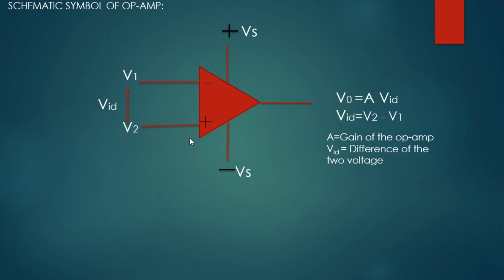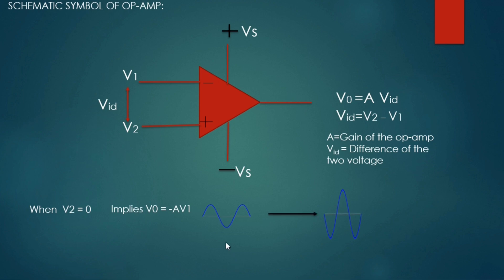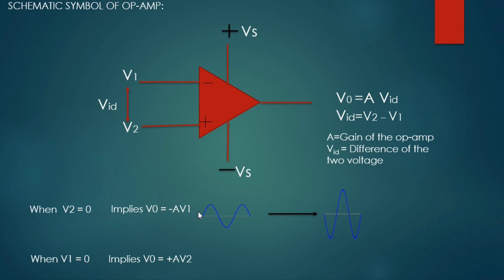These two input voltages are called inverting and non-inverting. When V2 equals 0, that is the input is applied only to the V1 terminal, the output will be negative of the amplifier gain times the input. This means there is a phase difference of 180 degrees between input and output, and that's why the V1 terminal is called the inverting terminal. Similarly, when V1 equals 0 and input is applied only to V2, the output is positive gain times V2, with no phase difference, so V2 is called the non-inverting terminal.